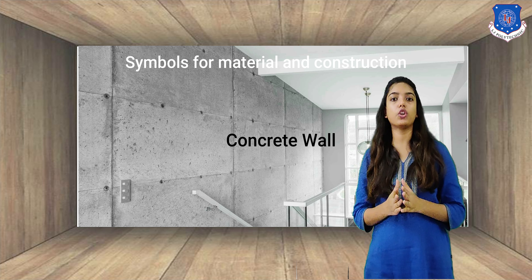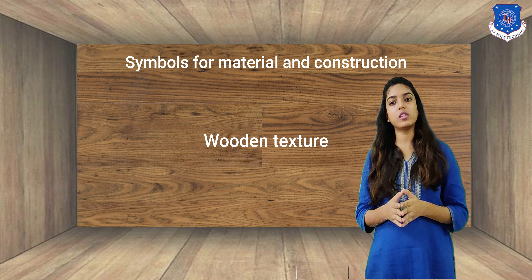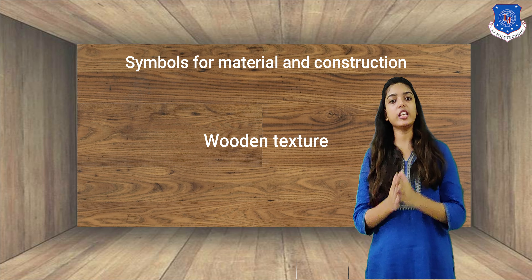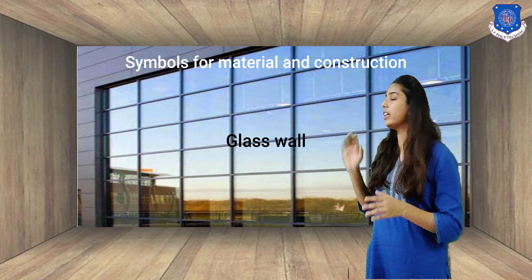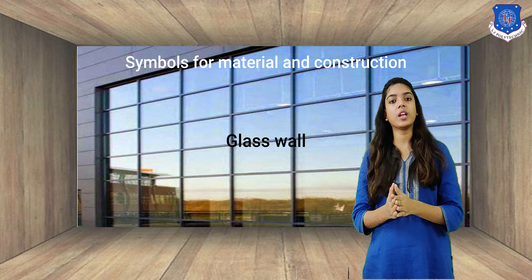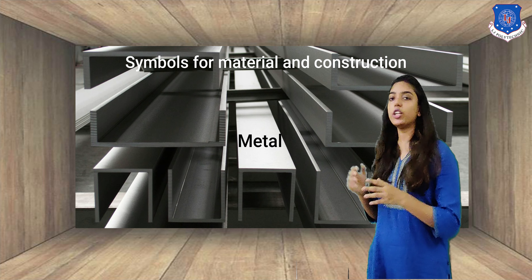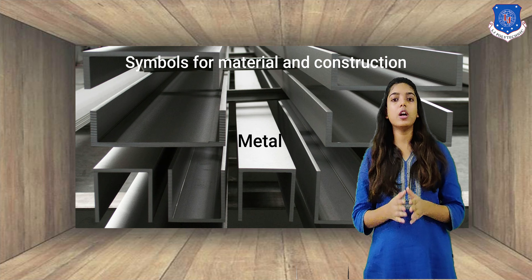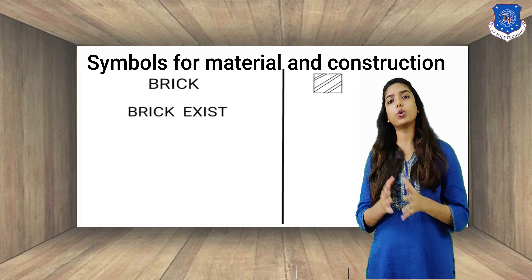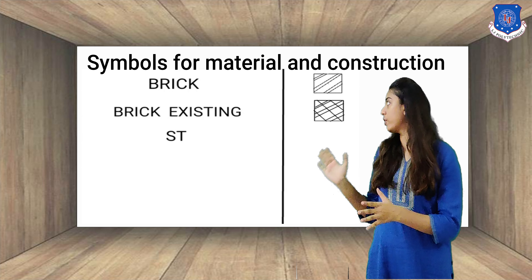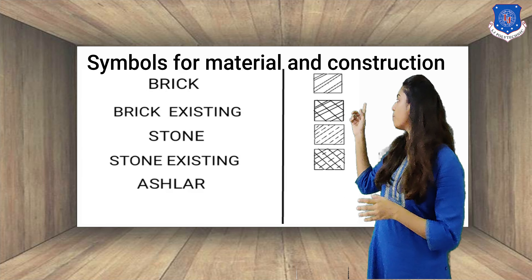As you can see on the screen, there are multiple types of materials which are used in the construction of a building. In the upcoming slides we will see how to represent each and every building material in architectural signs. These symbols are representations of these materials.